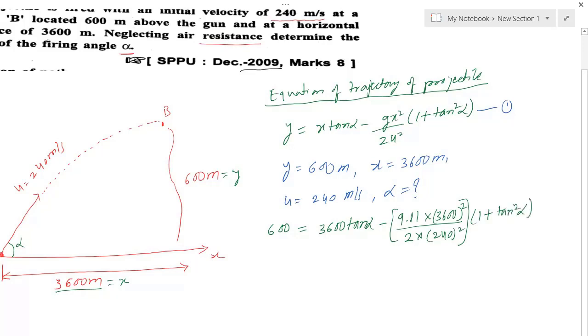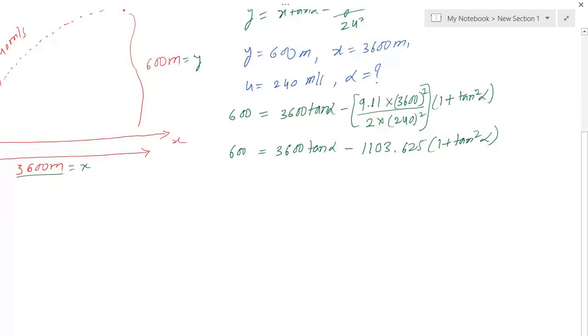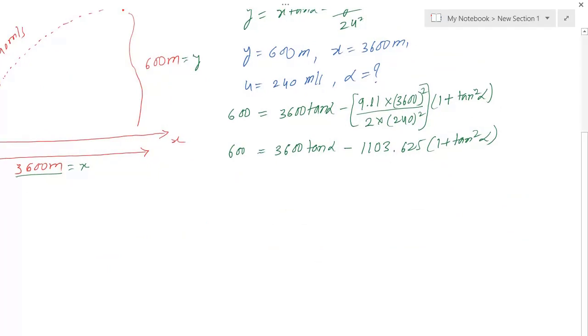Let's simplify this. On simplification it becomes 600 equals 3600 tan alpha minus 1103.625 times (1 plus tan squared alpha).